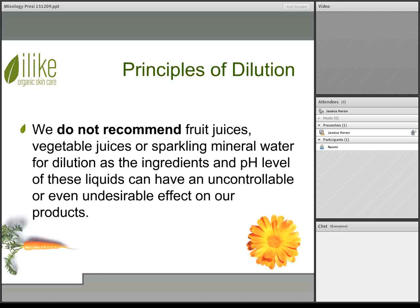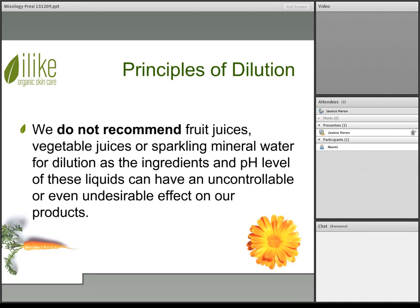Remember that we do not recommend fruit juices, vegetable juices, or sparkling mineral water for dilution. These types of ingredients and their pH levels can have a very uncontrollable or even undesirable effect on our products. The pH of these types of products tends to be quite acidic. When you add vegetable juices or sparkling water — things that have an uncontrollable pH level — you are creating an unstable pH environment. It's best when doing any type of dilution to use water or herbal teas that have more of a neutral pH.